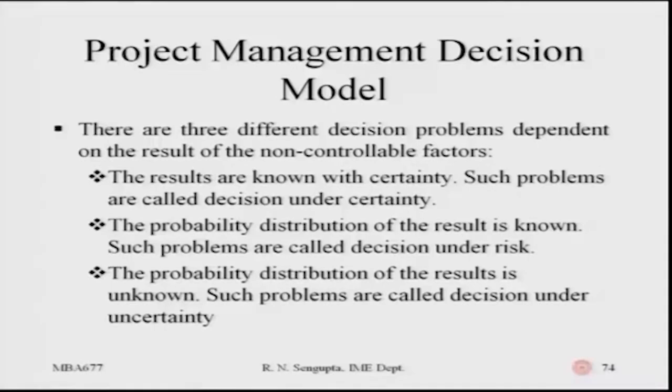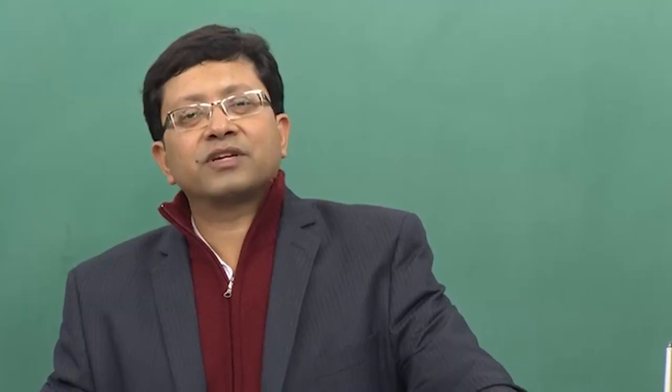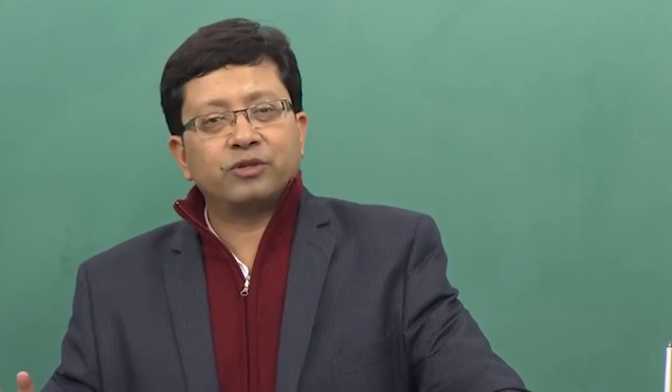There are three different decision problems depending on the results of non-controllable factors. First, results are known with certainty. Second, the probability distributions of results are known. Third, the probability distributions are unknown. If results are known with certainty, such problems are called decisions under certainty - risk does not arise, as all variables including time, resource constraints, and cost implications are known with one hundred percent probability.